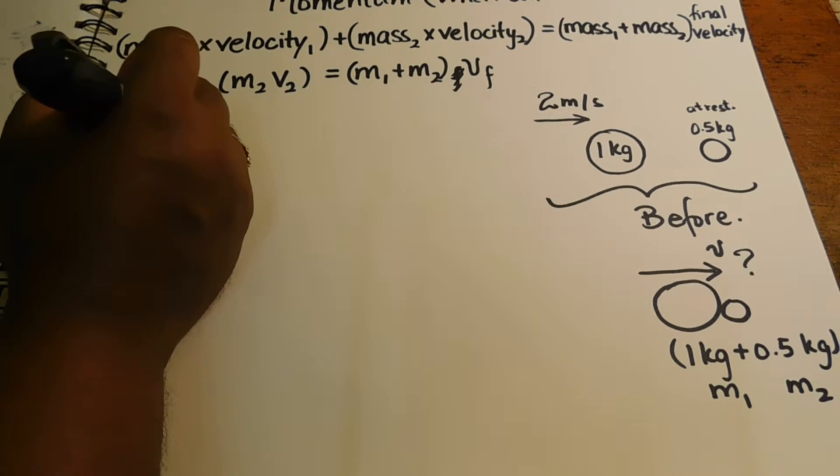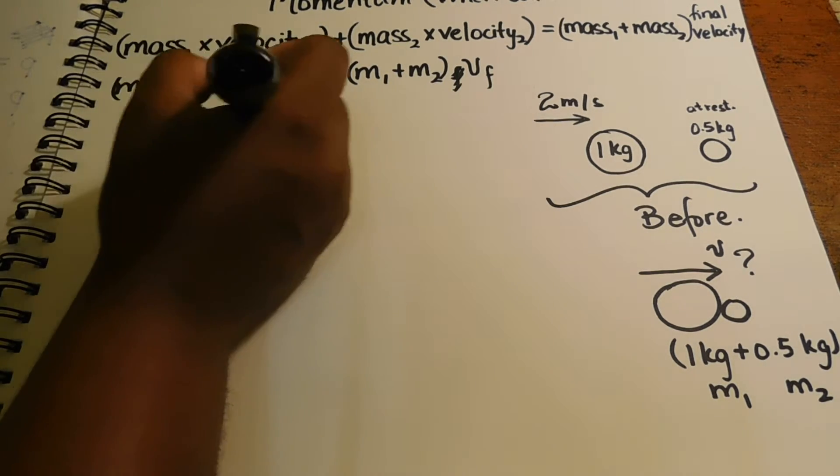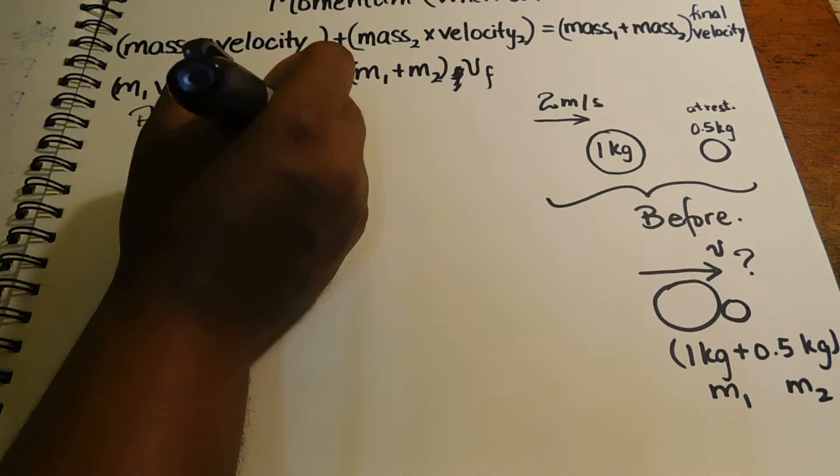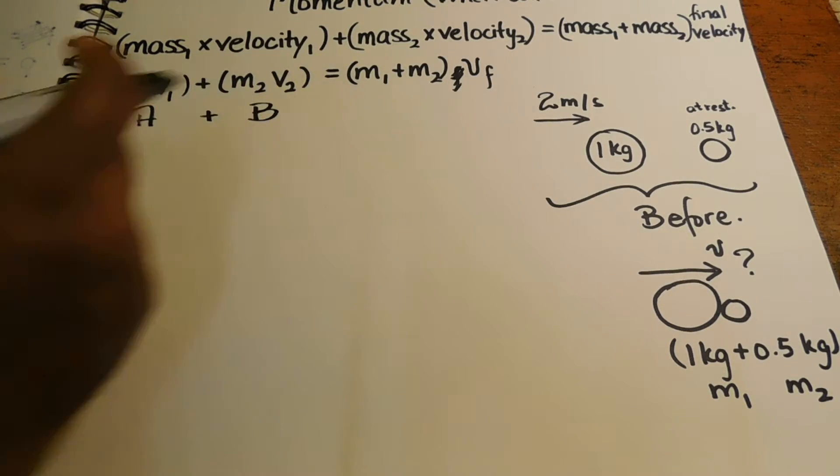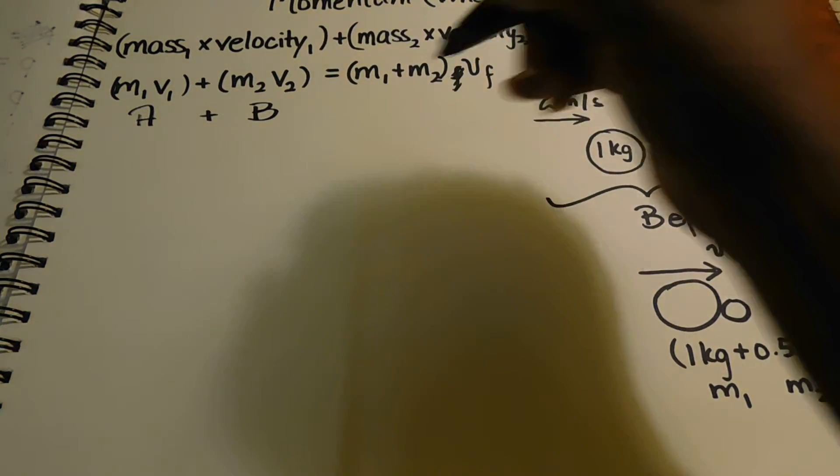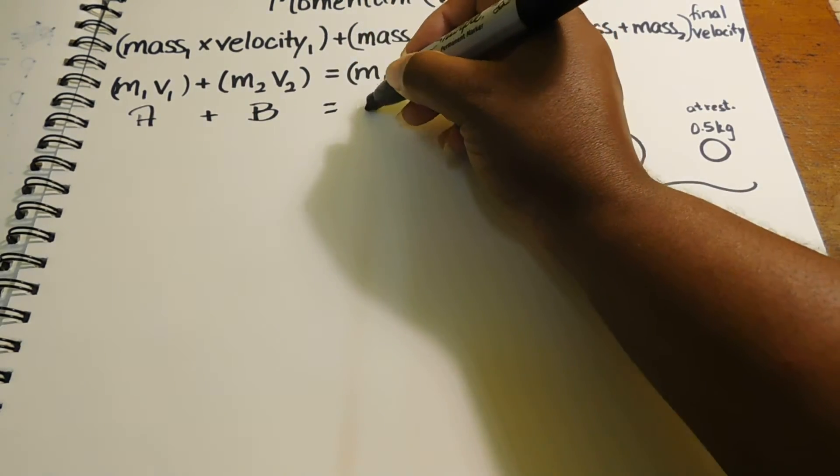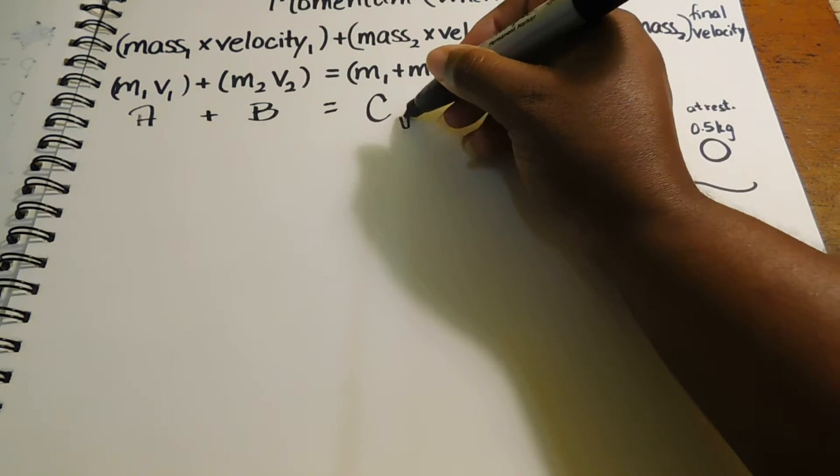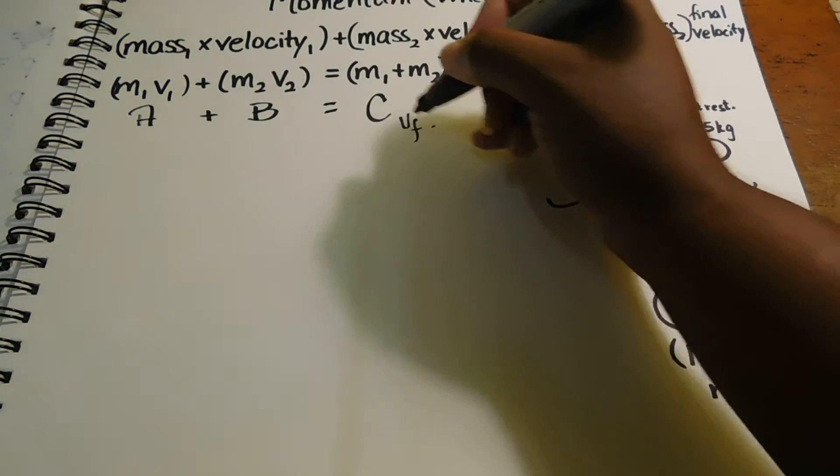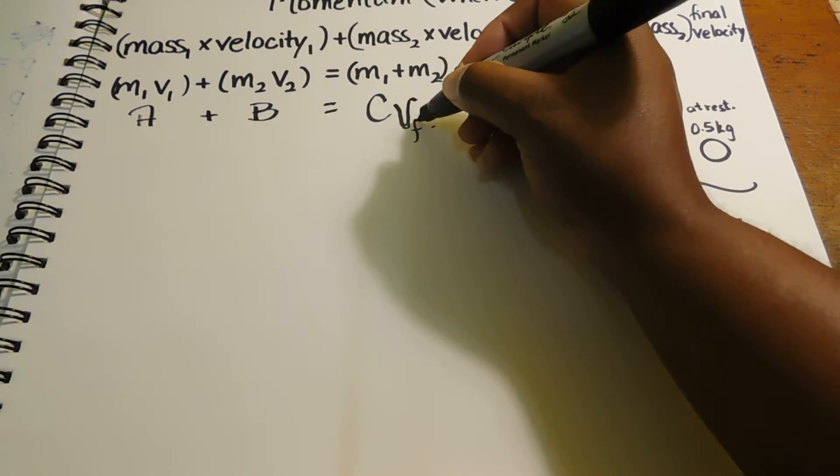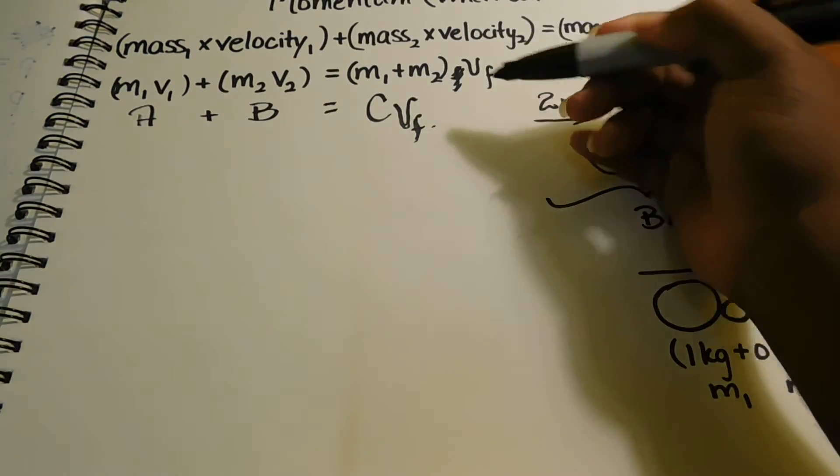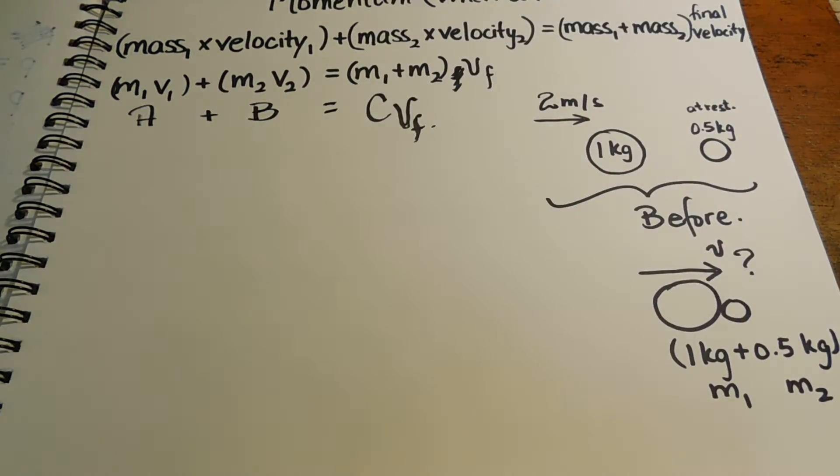So for M1 V1, I will call it A. M2 V2, I will call it B. Because this sentence will give you one number together. And this, I will call it C VF. Which means that this is seen as one entity as well.